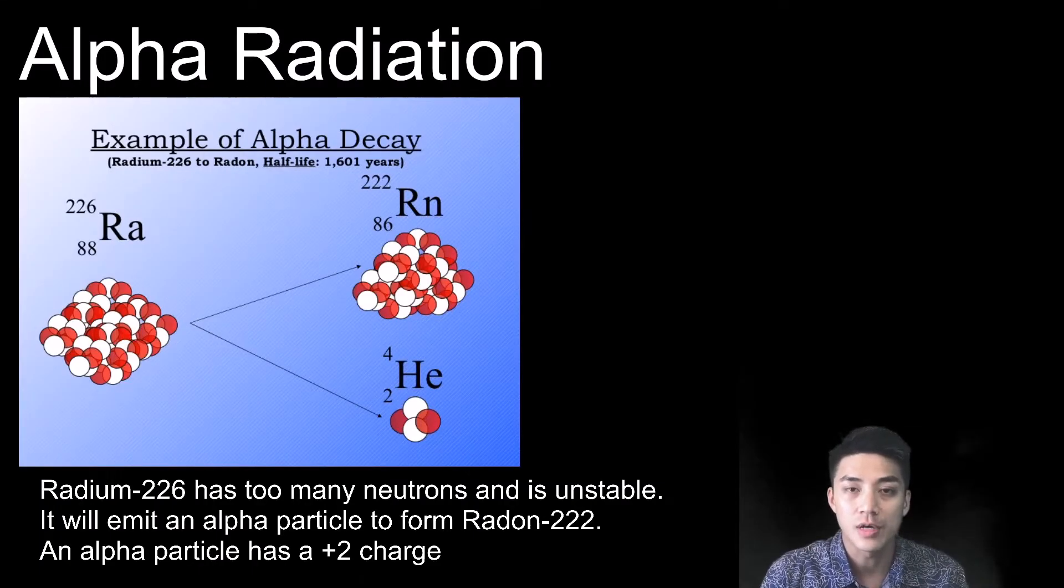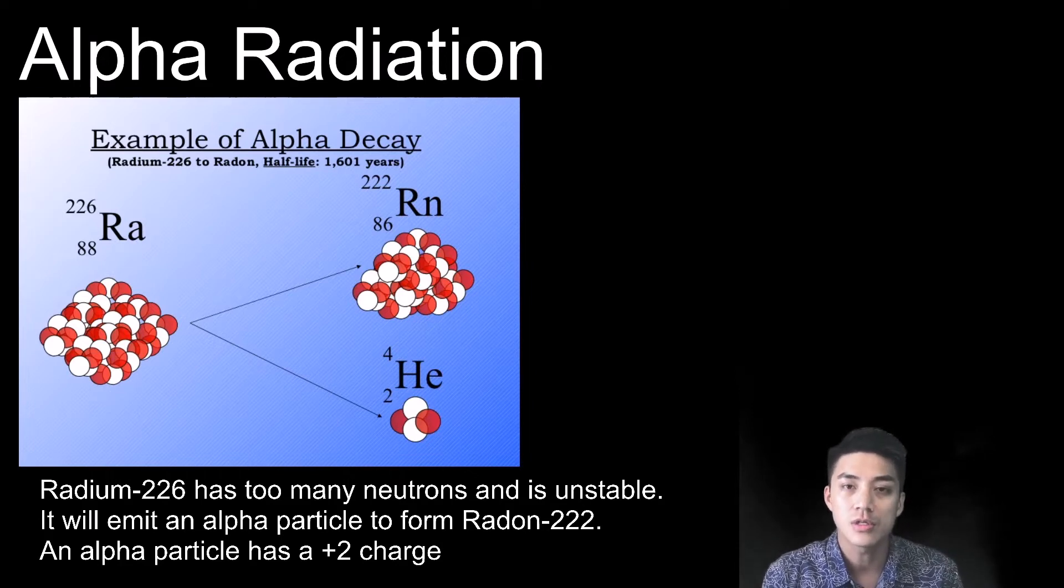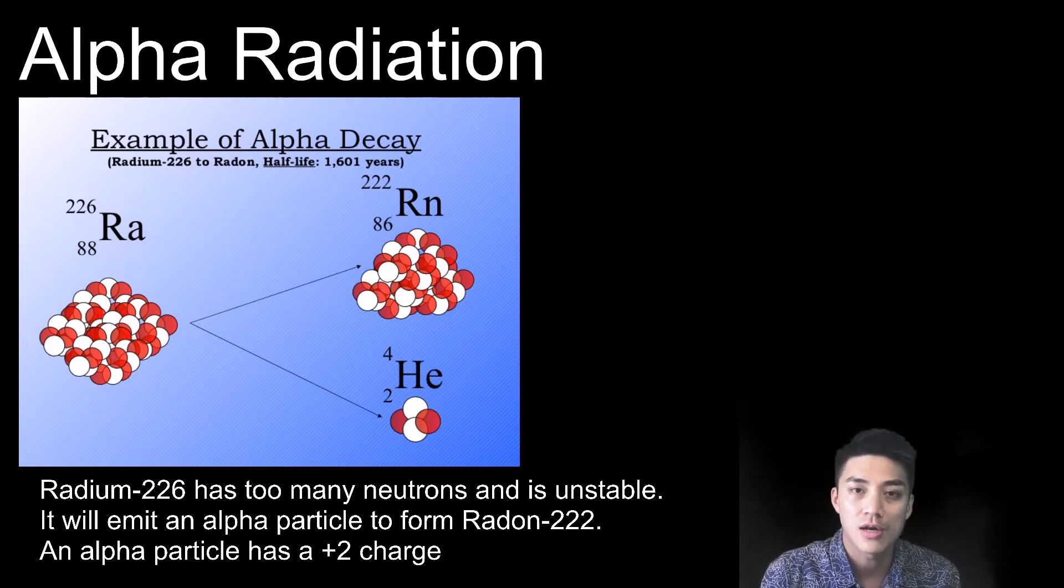As I mentioned in part two for atomic structure, any nucleus that has too many neutrons or too little neutrons is unstable. And radium-226 falls under this category. So as a result, it emits alpha radiation.